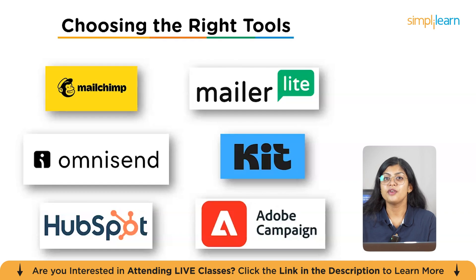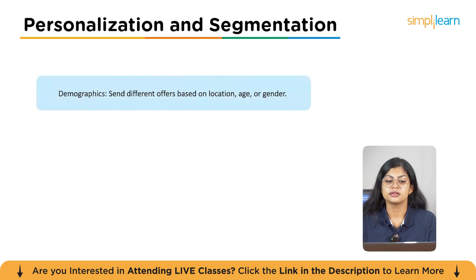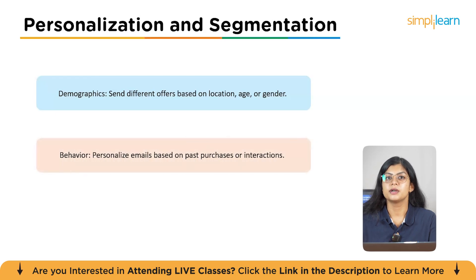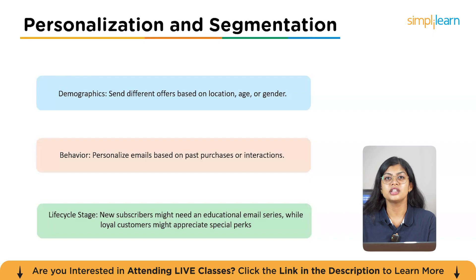Segmentation allows you to send more relevant emails to different groups within your audience. For example: demographics — send different offers based on location, age, or gender. Behavior — personalize emails based on past purchases or interactions. Lifecycle stage — new subscribers might need an educational email series, while loyal customers might appreciate exclusive perks. Pro tip: personalization goes beyond just using someone's name — use their interests or purchase behavior to suggest products or content that fit their needs.